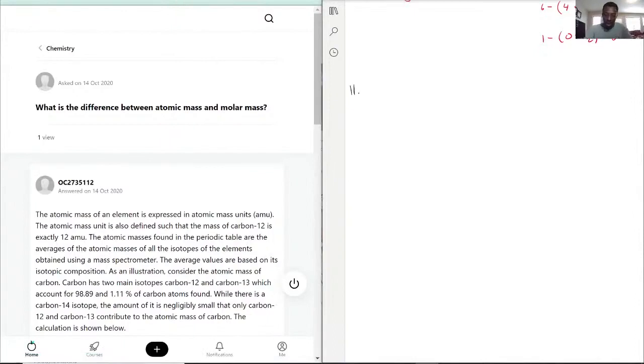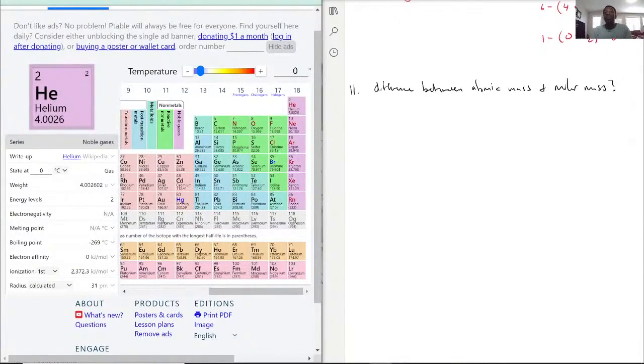What is the difference between atomic mass and molar mass? And molar mass. The key difference here actually depends on what type of compound you are dealing with or element. Atomic mass is strictly the number on the periodic table.